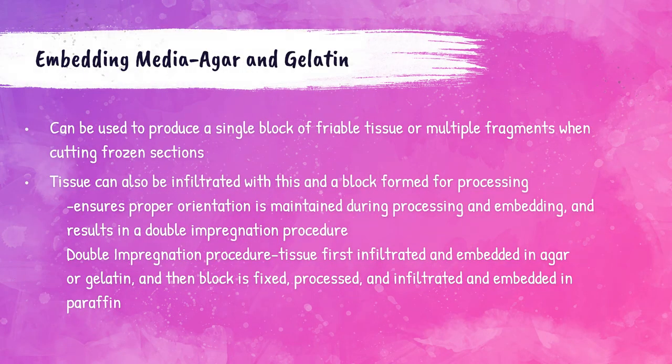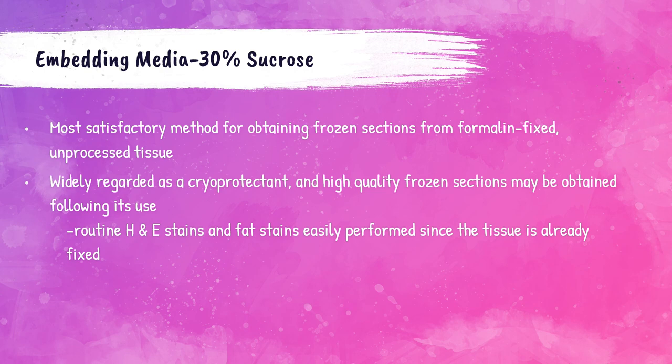Agar and gelatin can also be used as embedding media. They can be used to produce a single block of friable tissue or for multiple tissue fragments when cutting frozen sections. In the double impregnation procedure, the tissue is first infiltrated with agar or gelatin, then the block is fixed, processed, and infiltrated again with paraffin wax. Using 30% sucrose as an embedding medium is great for frozen sections from unprocessed formalin-fixed tissue. Sucrose is called a cryoprotectant — it prevents tissue from being damaged by the freezing process. Both H&E and fat stains are easily performed on tissue embedded with 30% sucrose.